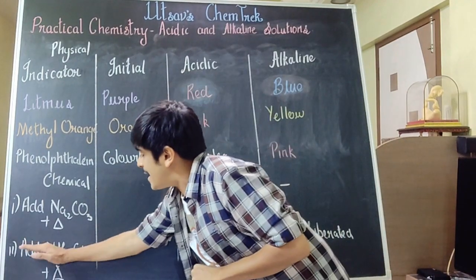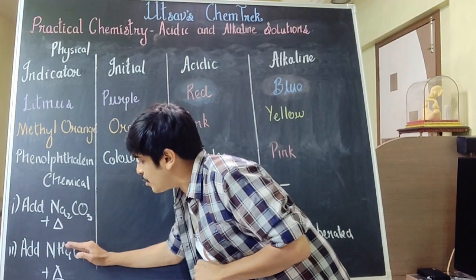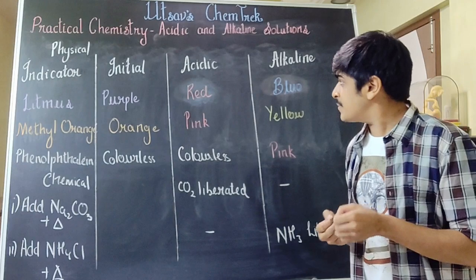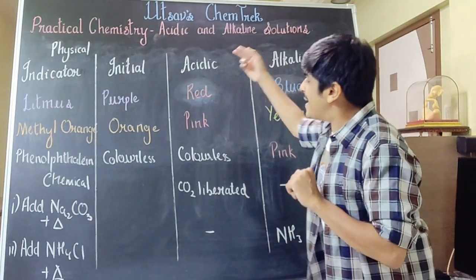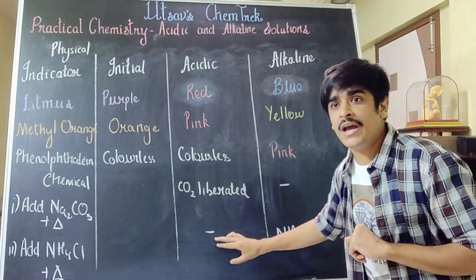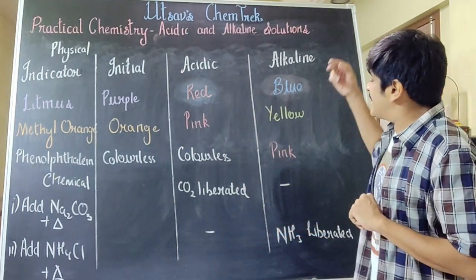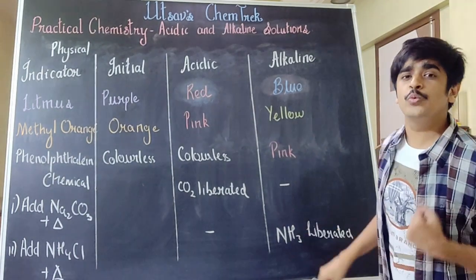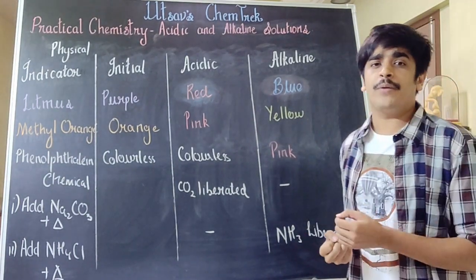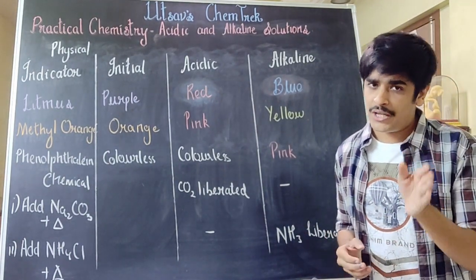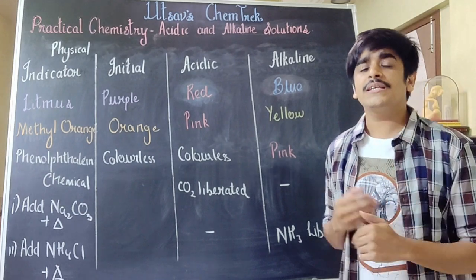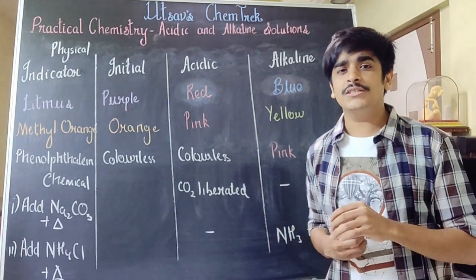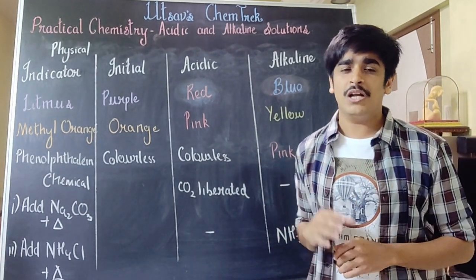On the other hand, you can add ammonium chloride and heat it slightly with respect to both solutions. No gas will be produced in an acidic solution. But an alkaline solution will give you a basic gas which is nothing but ammonia, NH3. It is a gas which when passed through Nessler's reagent, turns it brown in colour.